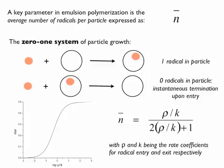You can ask yourself: how many radicals are there in one particle? I talked about this a little before. We have this value called n-bar, which is the average number of radicals per particle. The simplest and classical way of thinking about this is zero-one kinetics. Zero-one kinetics means there is either zero radicals or one radical in a particle. Imagine I have a radical propagating in the water phase that wants to enter my particle when it becomes sufficiently hydrophobic, and my particle is empty with no radical in there.